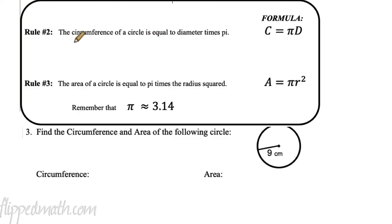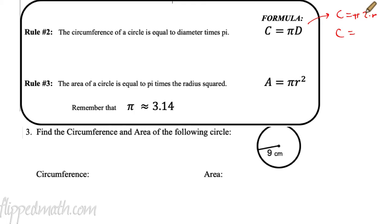Now we have two formulas. The first one: circumference equals pi times diameter — that's rule number two. Some people prefer everything in terms of radius, so they substitute diameter equals two times radius and get circumference equals two pi r. That's the same exact formula — two times the radius is the diameter. We'll use circumference equals pi times diameter since it's shorter.